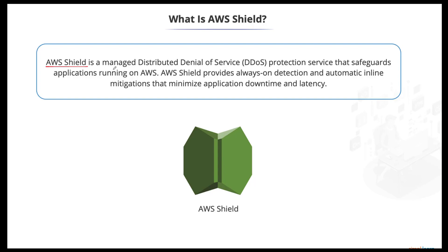Next we have AWS Shield, which is a managed distributed denial-of-service protection service that safeguards applications running on AWS. Shield provides always-on detection and automatic inline mitigations that minimize application downtime and latency. Using WAF as a web ACL (web access control list), we can also minimize the effects of denial-of-service attacks.